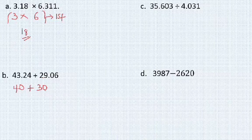We have to complete the answer. So 40 plus 30 is going to give us 70. Hence, this is our estimated value. We move to (c).